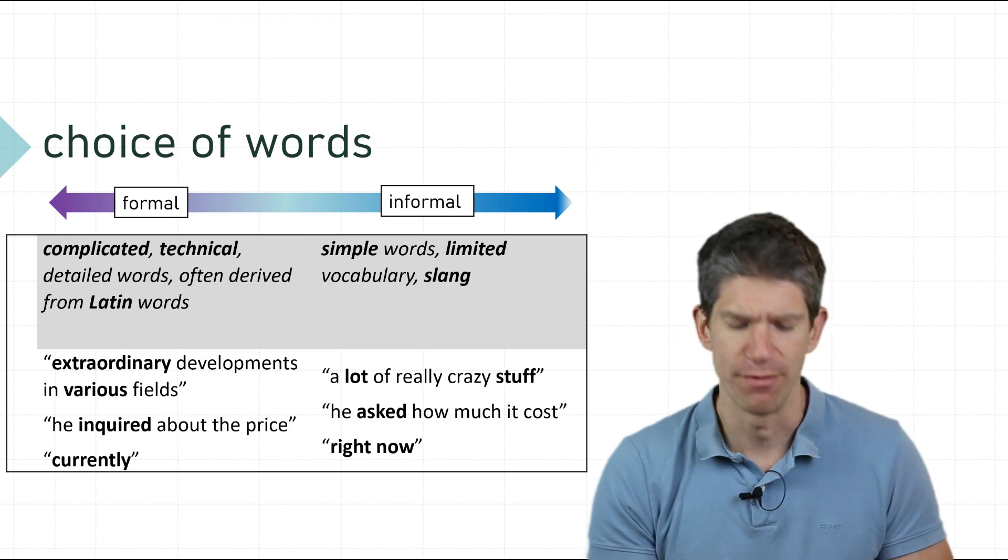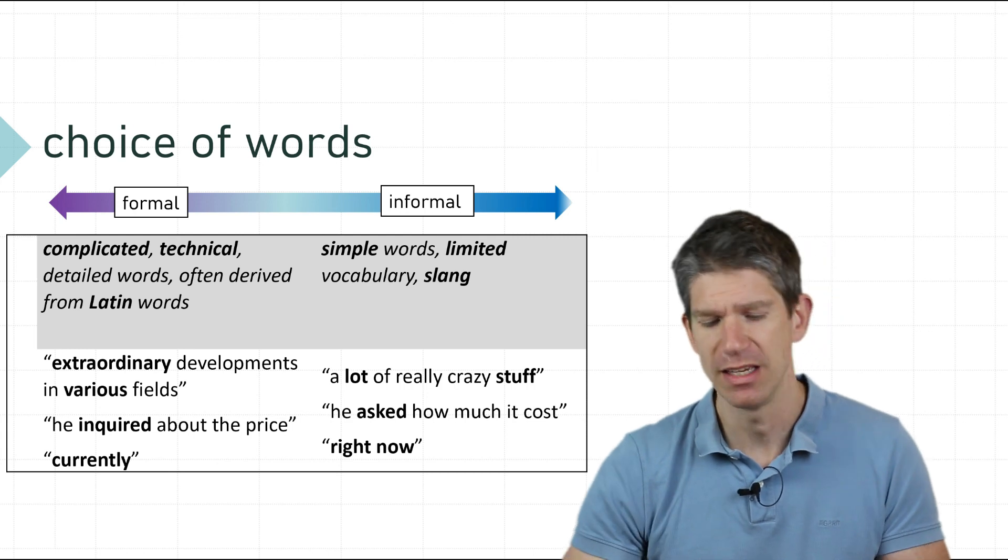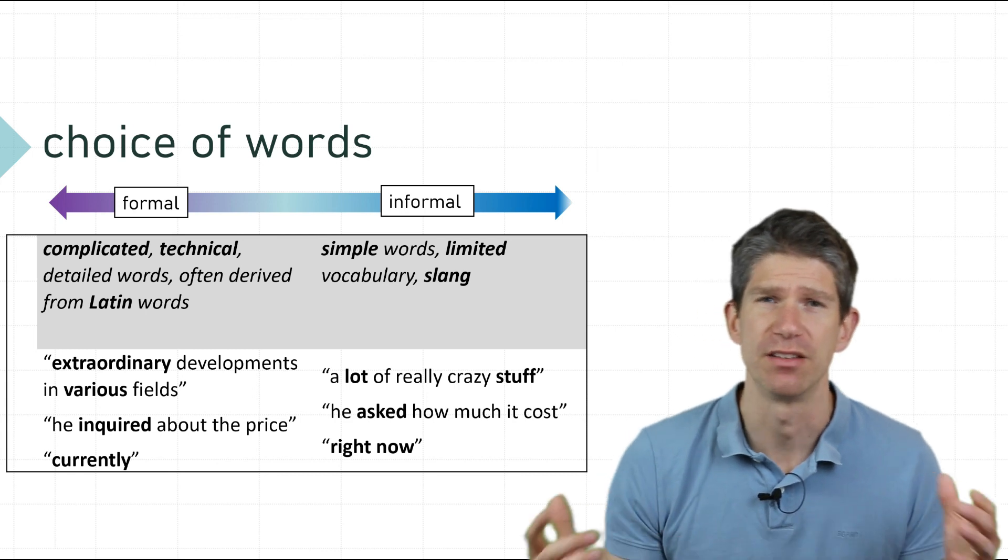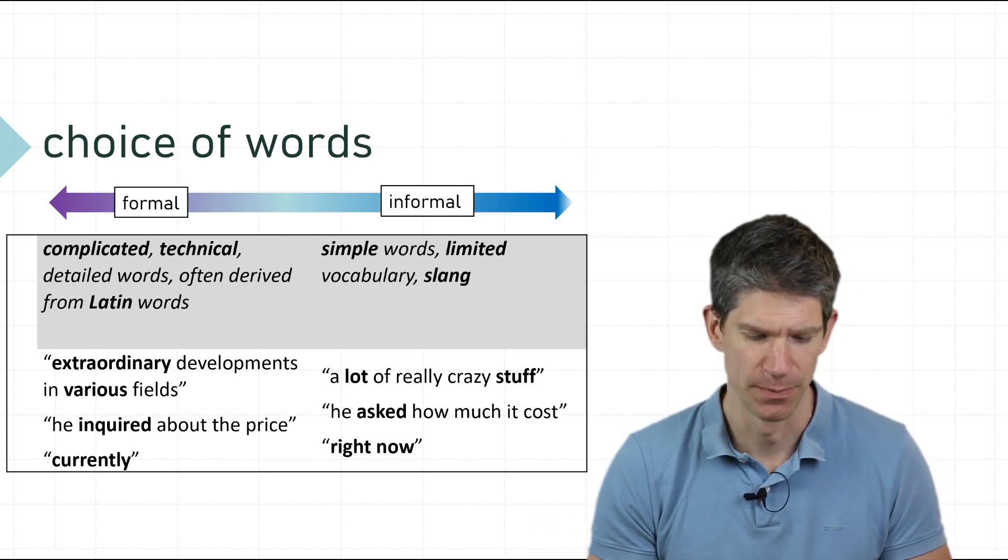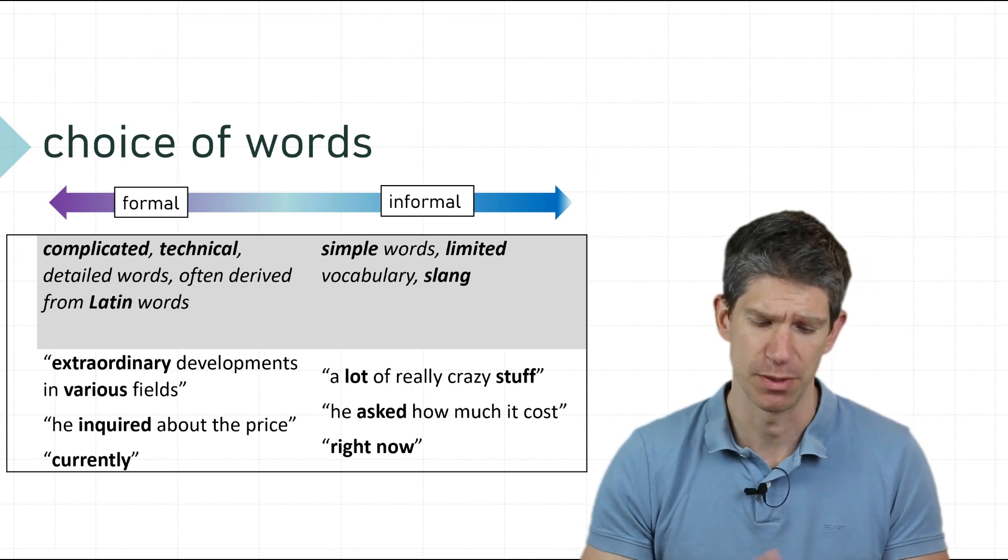So here, in informal language you might use words like 'lot' and 'stuff' which are not derived from Latin. Of course you can look for alternatives to words. For example, the word 'ask'...